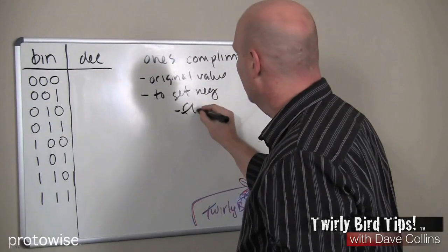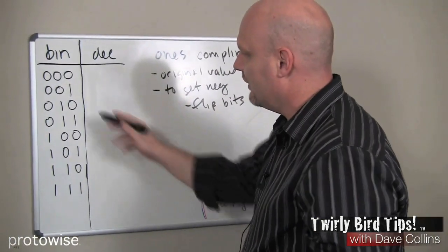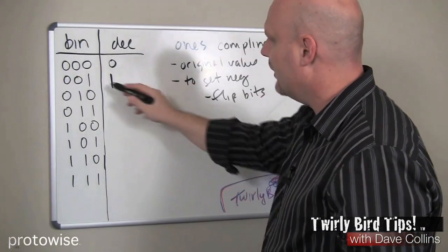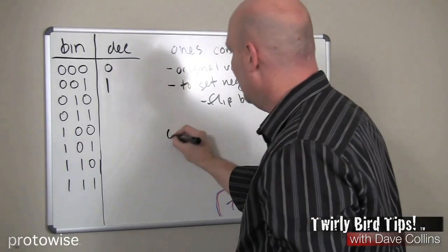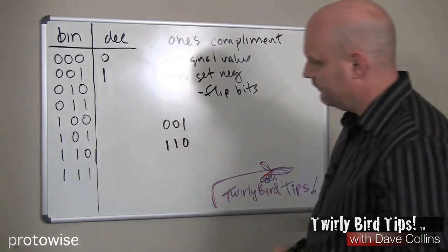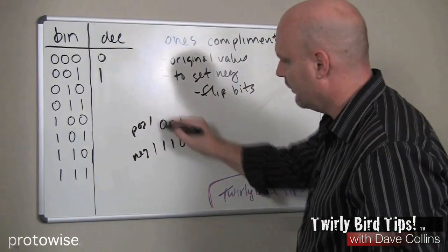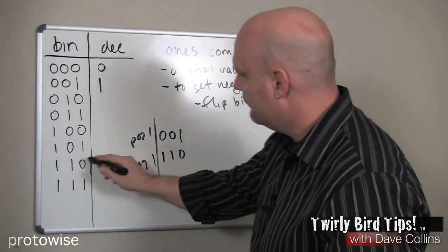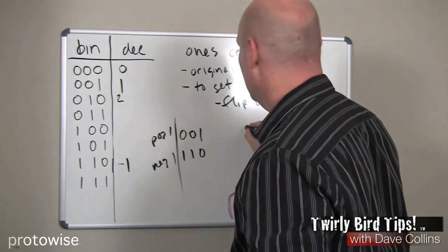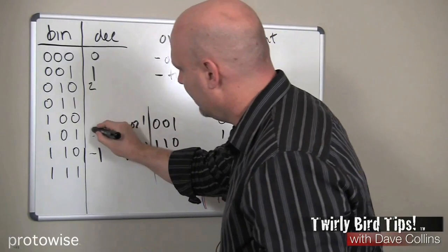With one's complement, to get the negative of an original value, we simply flip the bits. For example, positive one is represented as 0 0 1, so negative one is 1 1 0. For positive two, represented as 0 1 0, flipping the bits gives us 1 0 1, which is negative two. For positive three, 0 1 1 flipped becomes 1 0 0, which is our negative three.